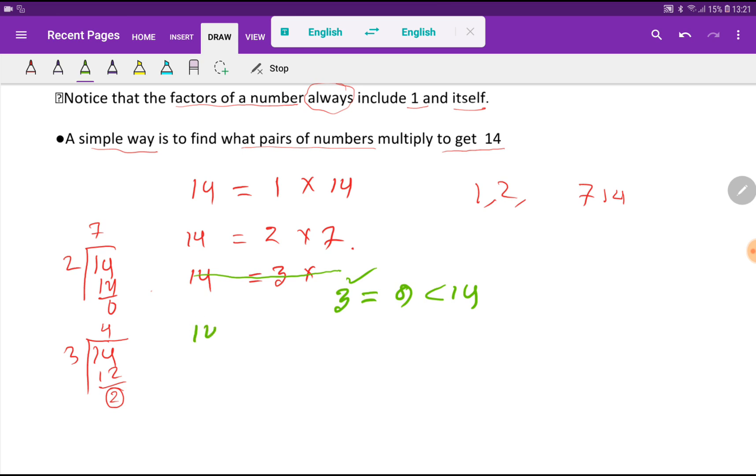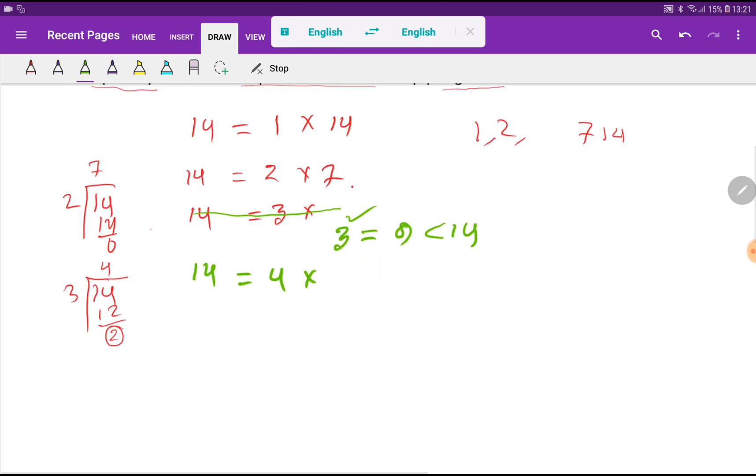Now, if I take 4, then what number will come here? If I divide 14 by 4, then what will happen? Your remainder will be 2. So 4 is not your factor. Because 14 is not completely divisible by 4. Because if we divide 14 by 4, we will get remainder 2.